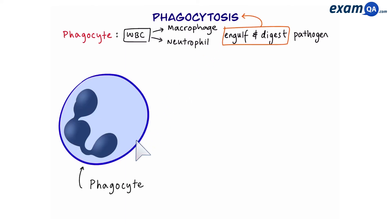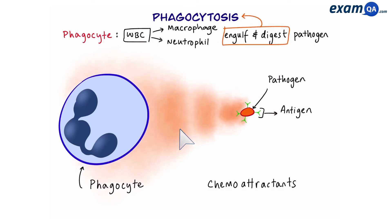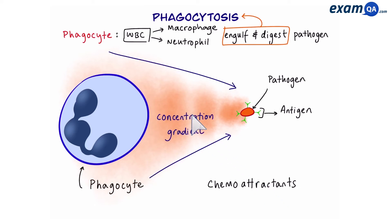Here we have a phagocyte. This three-lobed object is actually its nucleus, and the reason it's shaped like that is so it can squeeze through different cells and get all around your body. Here we have a pathogen with its foreign antigens on its surface. The phagocyte doesn't have eyes and can't see the pathogen, but it follows a trail of chemicals known as chemoattractants — just like a police dog sniffing for a criminal, the phagocyte uses the concentration gradient to direct itself towards the pathogen.